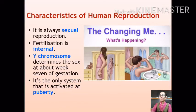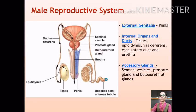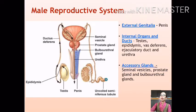Let us first take up the male reproductive system. The male reproductive system consists of primary sex organs which are the two testes; accessory glands which include seminal vesicles, prostate gland, and bulbourethral glands; accessory ducts including epididymis, vas deferens, ejaculatory duct, and urethra; and the external genitalia which is the penis.